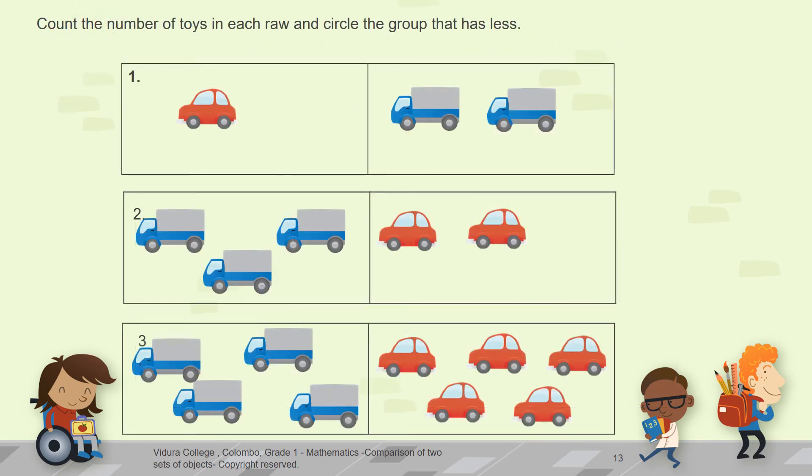Okay, here we have a different activity. Count the number of toys in each row and circle the group that has less. This time compare the rows and circle the group which has less objects. This is so easy. Do it with me.